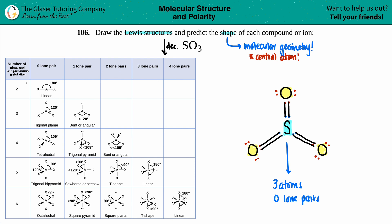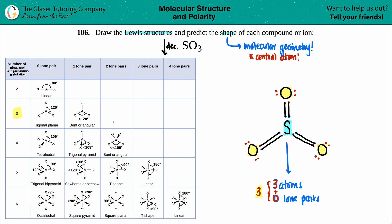To find which category we're in, you take the number of atoms and add the lone pairs: three plus zero equals three. So we're in the category of three. Since we have zero lone pairs, this molecule is trigonal planar.